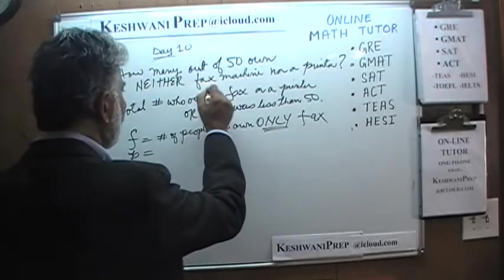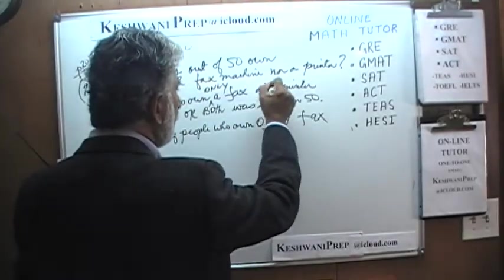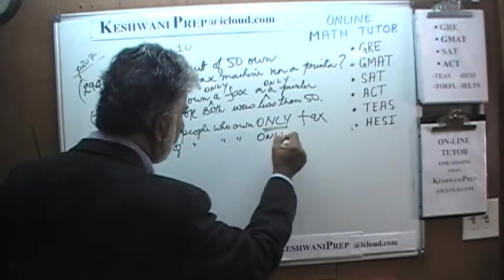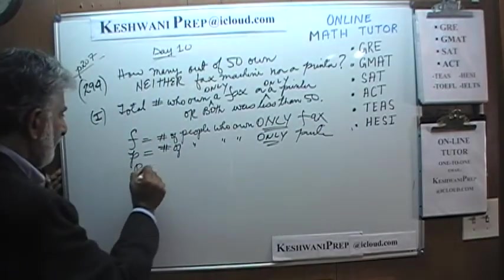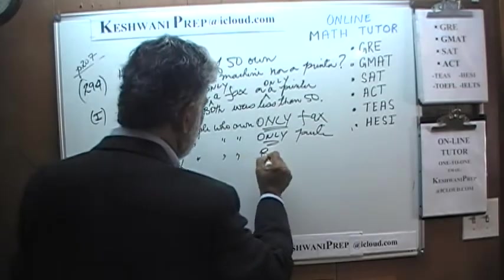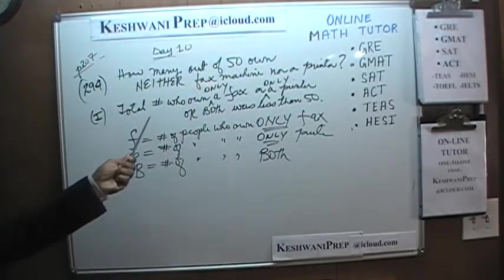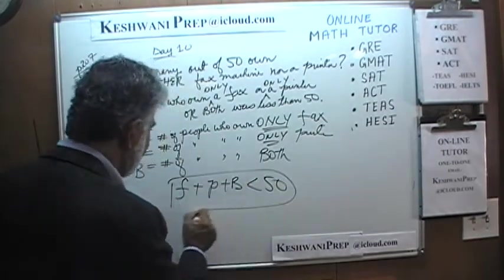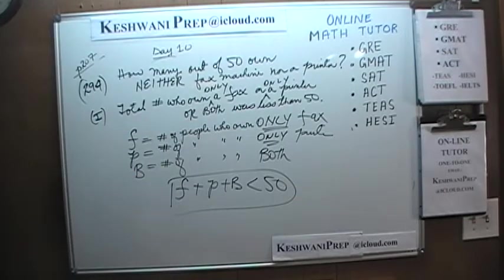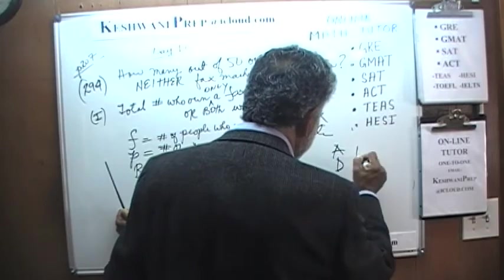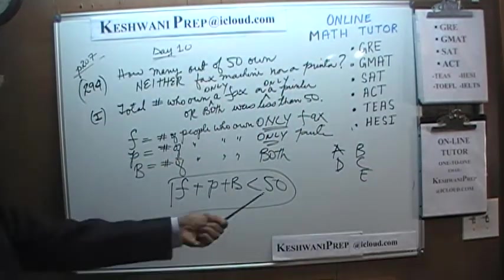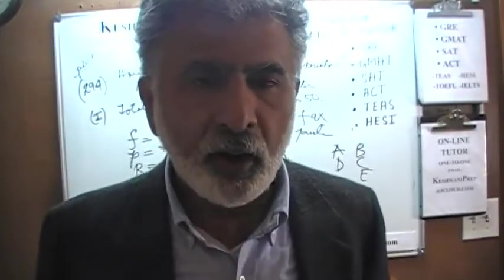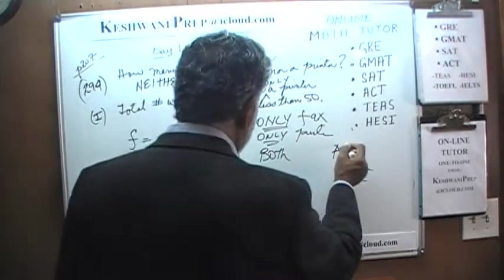The first statement tells us the total number of people who own only a fax machine, or only a printer, or both, is less than 50. That does not enable us to figure out how many own neither. The answer cannot be A or D. The second statement tells us the number of people who own both is exactly 15. Simply knowing that 15 people own both does not tell us how many own neither — second statement is also not enough.